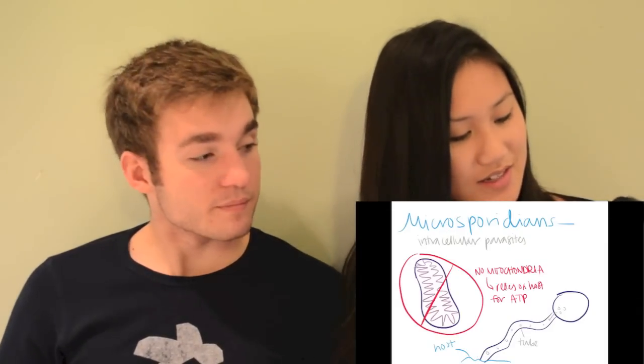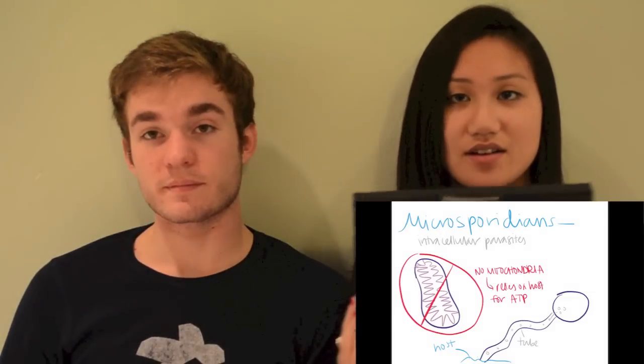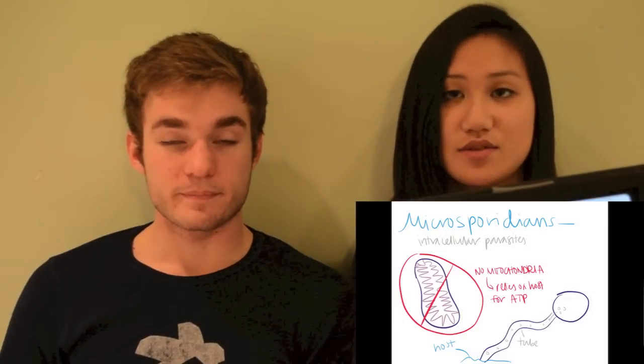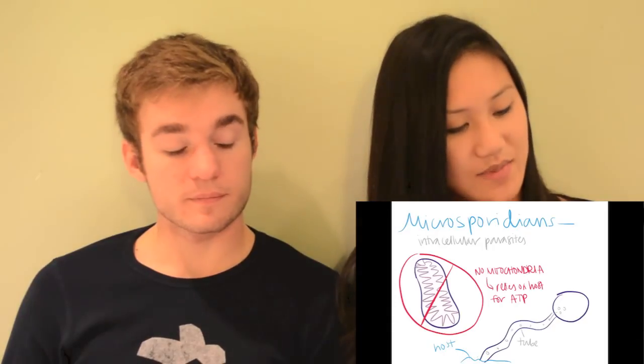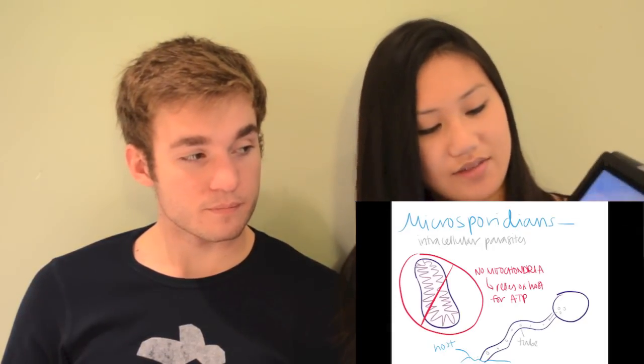Related to zygote fungi are the microsporidines, which is a parasitic kind of fungi. It's an intracellular parasite, and it does not have any mitochondria, which is why it needs to rely on host cells to take ATP and make energy to live. They're like these little circles with tubes on the end, and when they find the host cell, they stick the tube in and then they shoot their spores inside to infect the host.